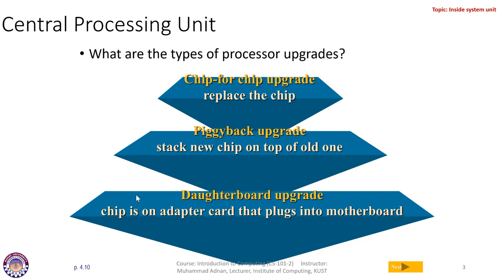For example, the GPU may be busy processing data related to graphics or image processing and displaying it on the screen. This enhances the overall processing speed because many small processors are working alongside the central processing unit, and these components together increase and enhance the processing speed of the computer.